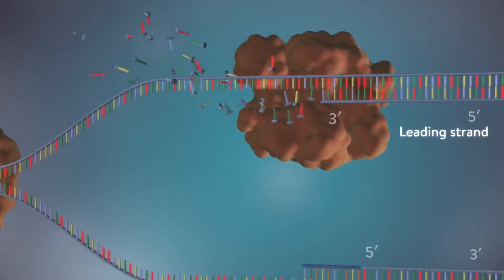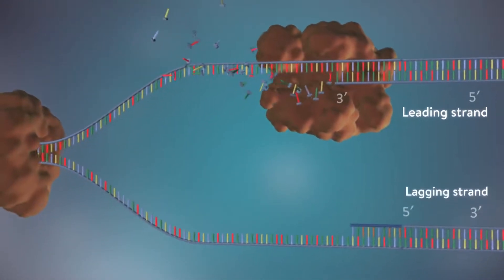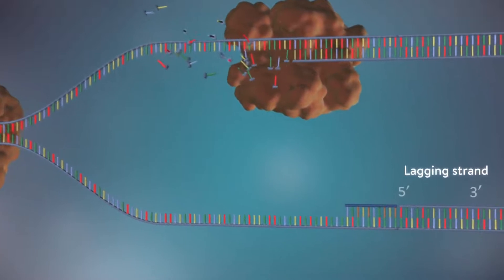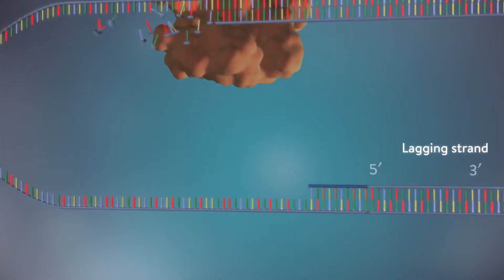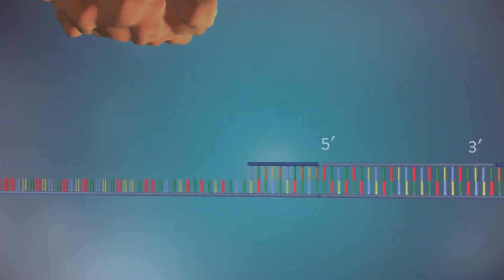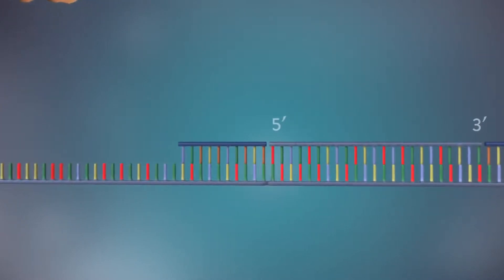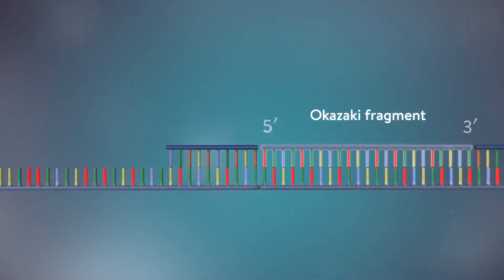The other strand, the lagging strand, cannot be made in this continuous way because it runs in the opposite direction. The DNA polymerase can therefore only make this strand in a series of small chunks called Okazaki fragments.